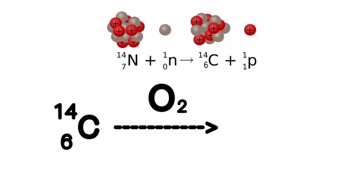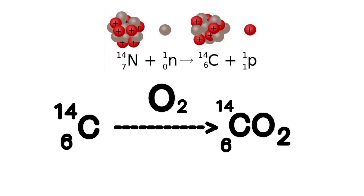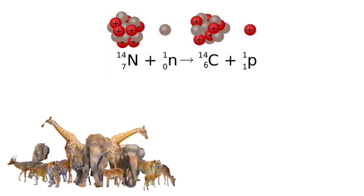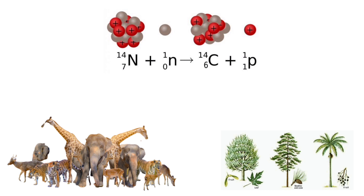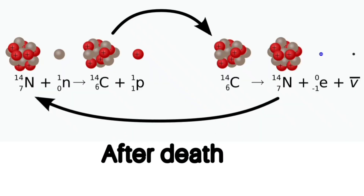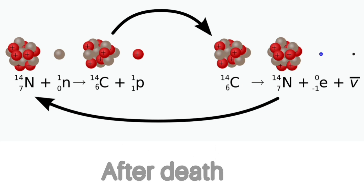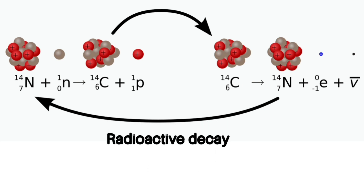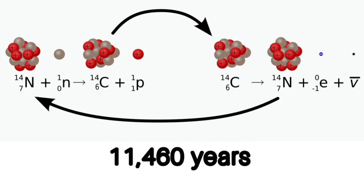Carbon-14 enters the global carbon cycle after rapidly oxidizing in air to carbon dioxide. Throughout their lives, animals and plants absorb carbon-14 from carbon dioxide. When they die, they stop exchanging carbon with the biosphere, and as a result their carbon-14 content begins to decrease at the rate set by the law of radioactive decay.